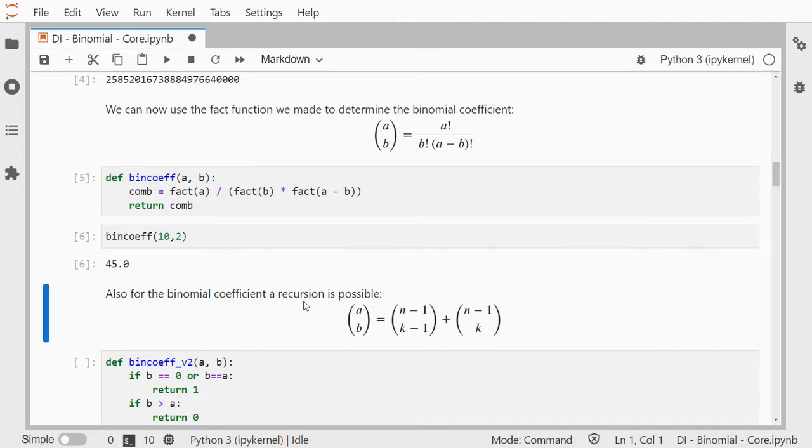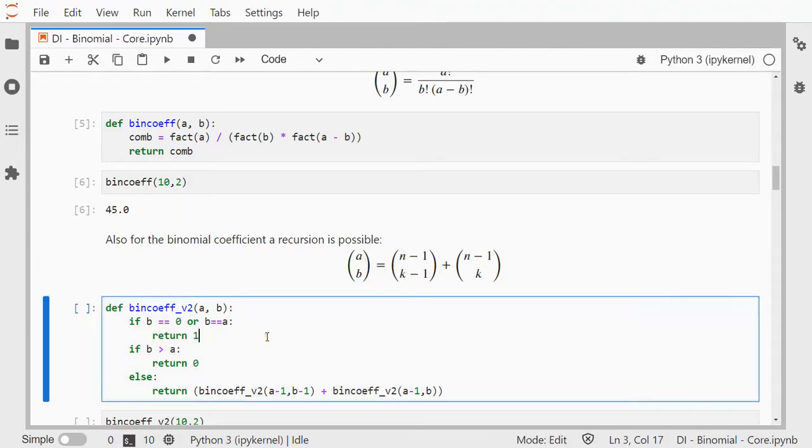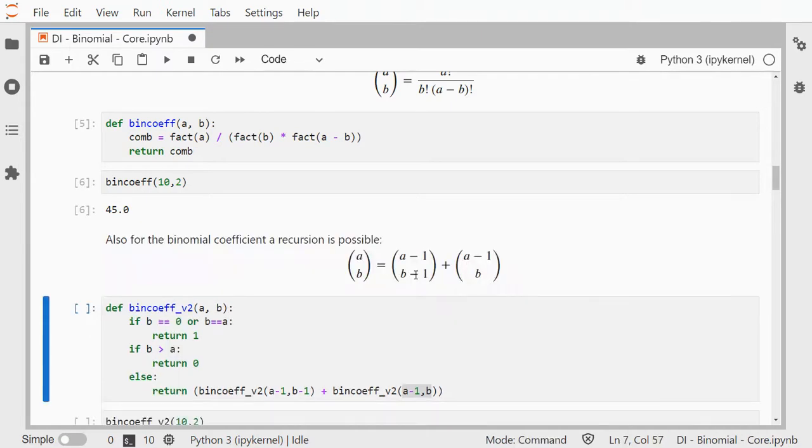There's also a recursive method for this. If you use this one, then you can say, it should stop if b is 0. So if we don't have any over here anymore, or if it's the same as the top one, then there's simply one option left. And as soon as b is greater than this one, then there are no options more left, because you can't choose 11 out of 10. And then it just uses the a minus 1, b minus 1, that's these two, and then a minus 1 and b, so that's these two. So instead of a and b, I should actually change this formula to showing a and b, instead of n and k.